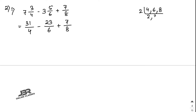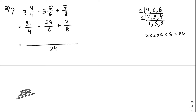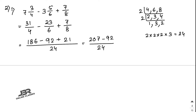Dividing 4, 6, 8 by 2 gives 2, 3, 4; by 2 gives 1, 3, 2; by 2 gives 1, 3, 1. LCM equals 2 times 2 times 2 times 3, which is 24. So with denominator 24: 4 sixes are 24, giving 31 times 6 equals 186; 6 fours are 24, giving 23 times 4 equals 92; 8 threes are 24, giving 7 times 3 equals 21.